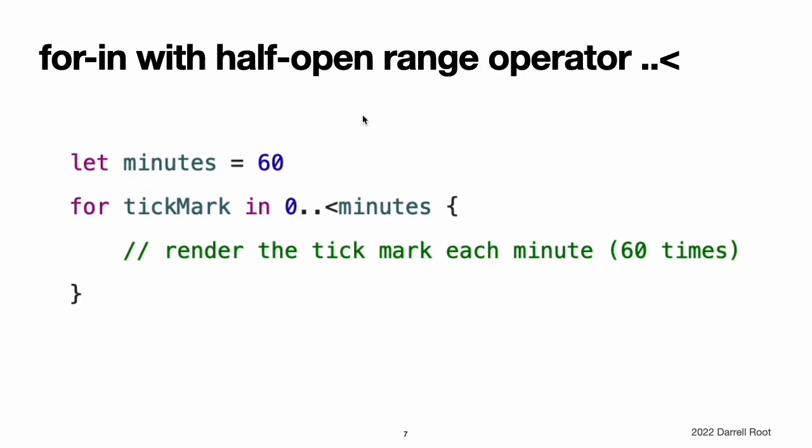In some situations, you might not want to use closed ranges, which include both endpoints. Consider drawing the tick marks for every minute on a watch face. You want to draw 60 tick marks starting with the zero minute. Use the half-open range operator to include the lower bound, but not the upper bound. For more about ranges, see range operators.